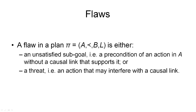Threats, however, are not the only types of flaws that can occur in a plan. The good news is there are only two types of flaws we need to look out for. In a plan pi that consists of the usual four components, we can have two types of flaw. The first is an unsatisfied sub-goal in that plan — a precondition of an action that does not have an incoming causal link that supports it. This could be the goal dummy action, which has all the goal conditions as preconditions, and every action added to the plan must also have all of its preconditions supported by a causal link. The second type of flaw is a threat — an action that may interfere with a causal link. And that's all the types of flaws we need to consider.